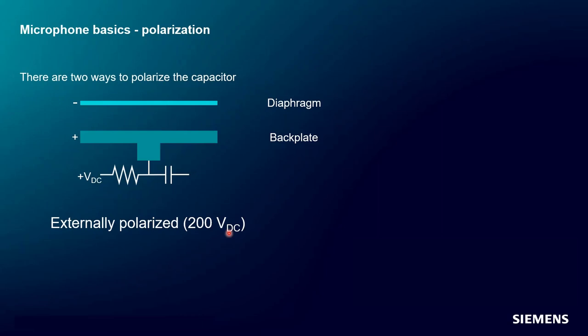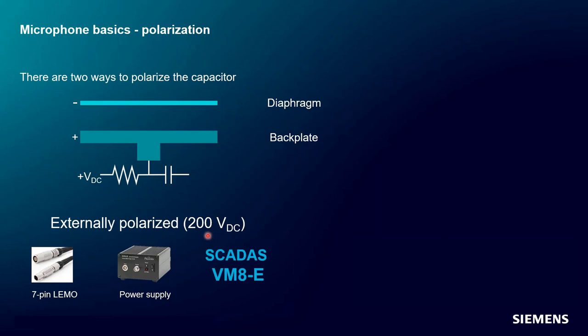When you're using an externally polarized microphone, you'll have these 7-pin LEMO connections. This is a telltale sign that you have an externally polarized microphone, and you're very likely going to need a power supply. You would plug the microphone in, and this would send out a voltage signal that is proportional to the pressure being measured. This guy is providing this 200 volts DC polarization to allow that capacitor to work. Of course, if you have a SCADAS VM8E, this card that we sell can do this polarization for you. So if you have a 7-pin LEMO externally polarized mic and you don't want to carry extra boxes around, you can plug directly into a SCADAS VM8, and we can provide the power it needs to use that microphone directly.